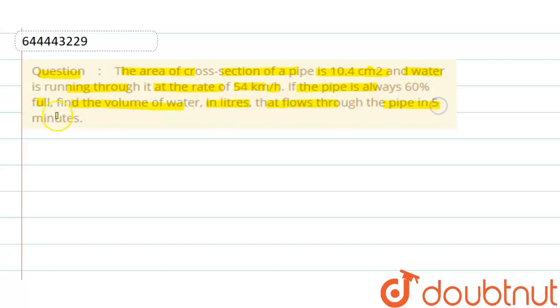So we have area of cross section of a pipe given as 10.4 centimeter square, and speed of water given.